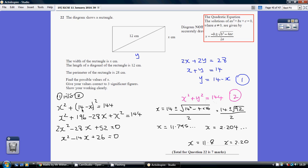So, multiplying out that pair of brackets and gathering like terms and making it equal to 0 and dividing through by 2, we get x squared minus 14x plus 26 equals 0, and then using the quadratic formula, we get 11.8 and 2.20 to 3 significant figures.